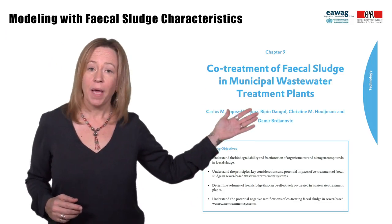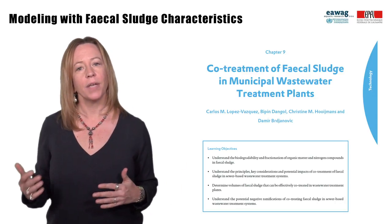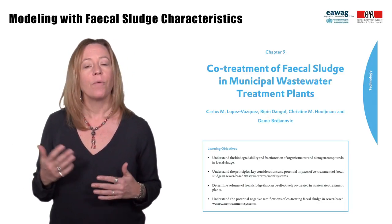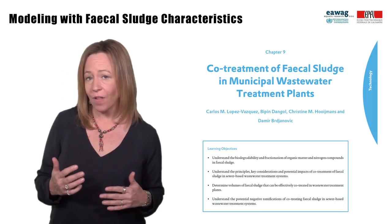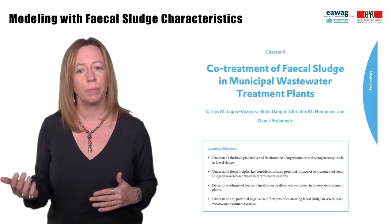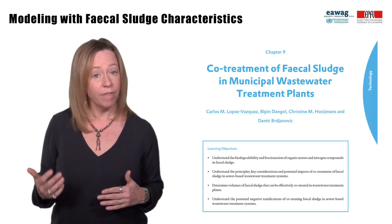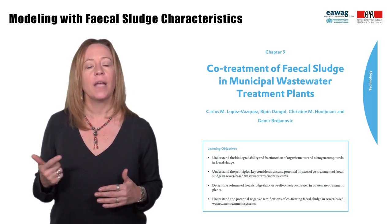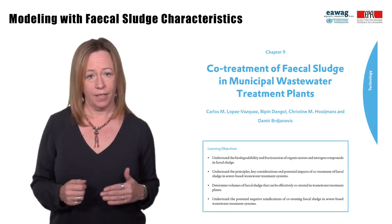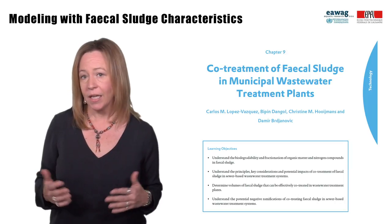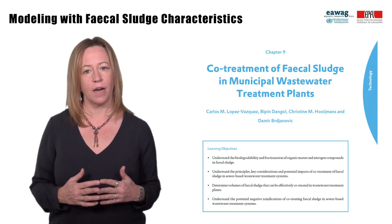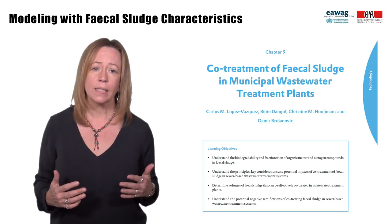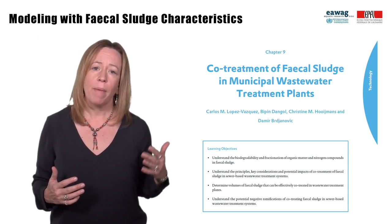Chapter 9 in the fecal sludge management book covers detailed modeling in more depth. It covers the impacts that fecal sludge with different strengths, concentrations, degradable organic matter, and inert solids have on the loading of wastewater treatment plants. Impacts on operations that can lead to failures include reduced effluent quality, maxed out aeration resulting in aerobic processes turning anaerobic, incomplete oxidation, filamentous bacteria, and overloading settling tanks and clarifiers. Overloading of anaerobic systems can also lead to inhibition of biological processes and increased sludge production, maxing out solids handling.